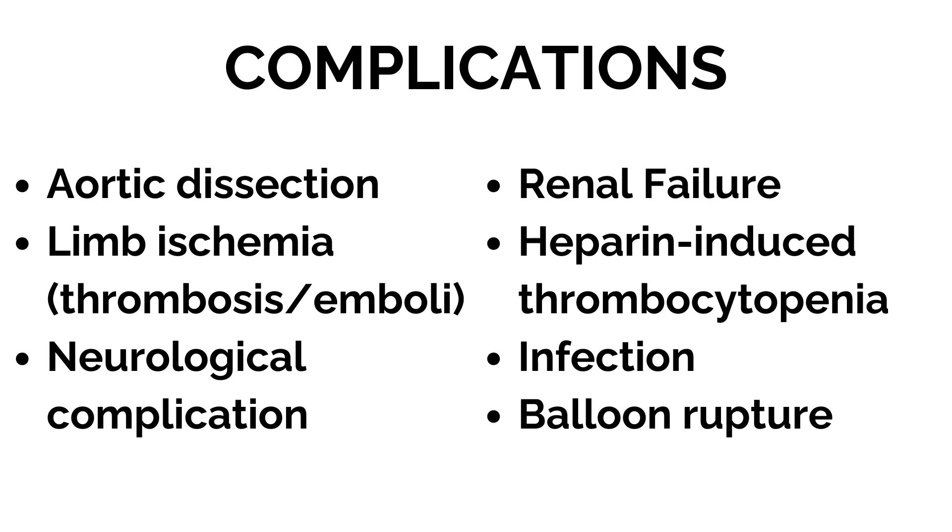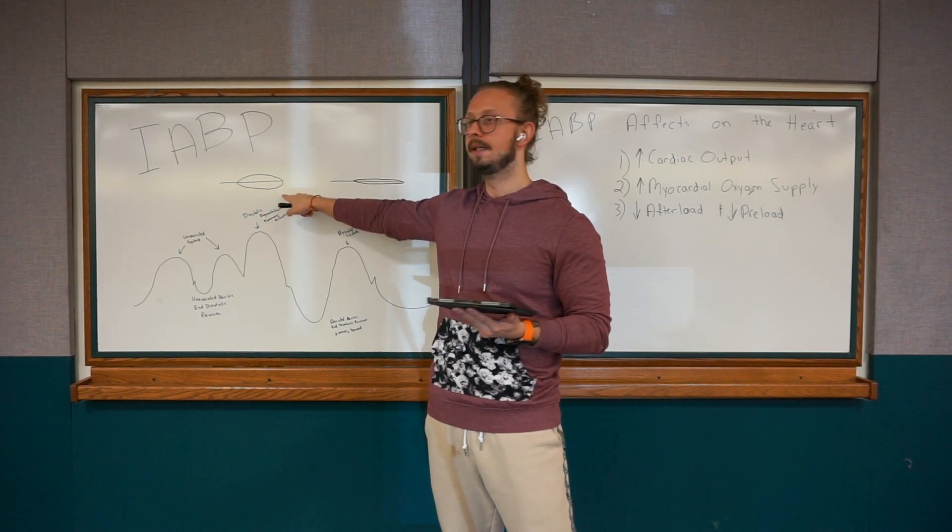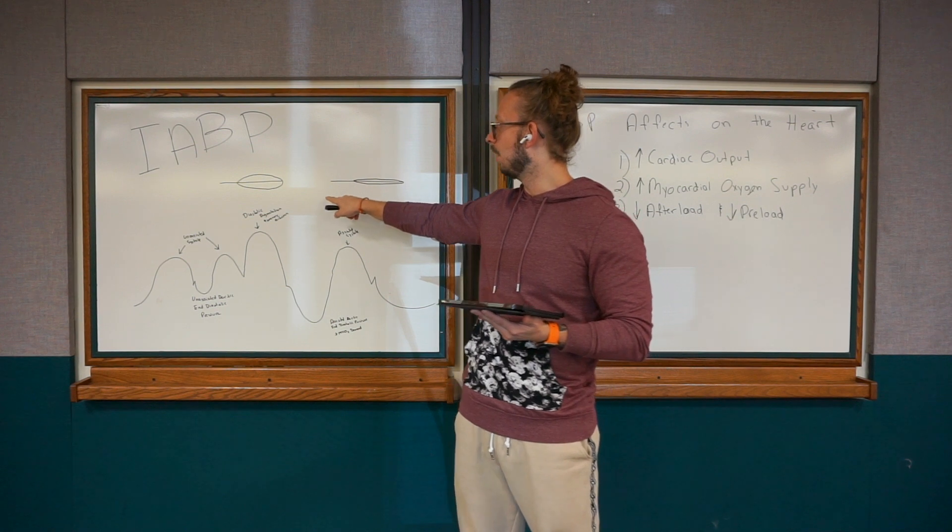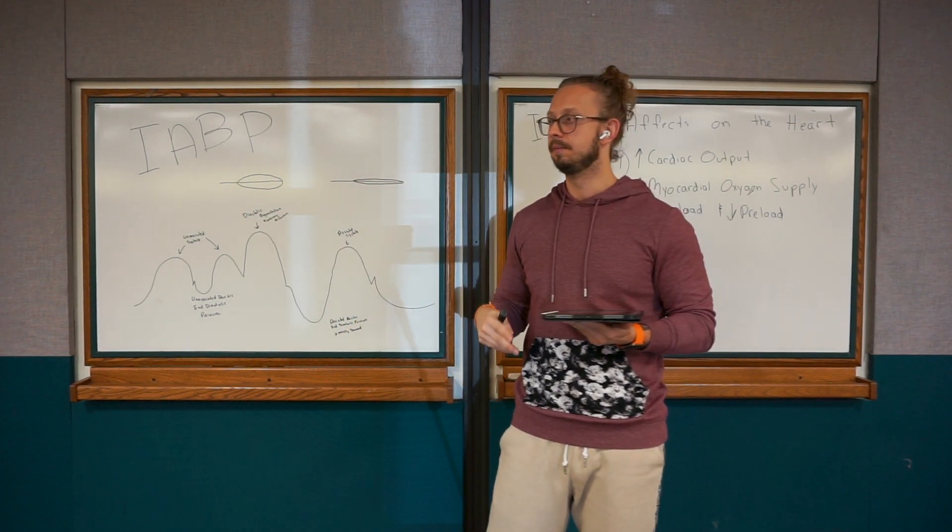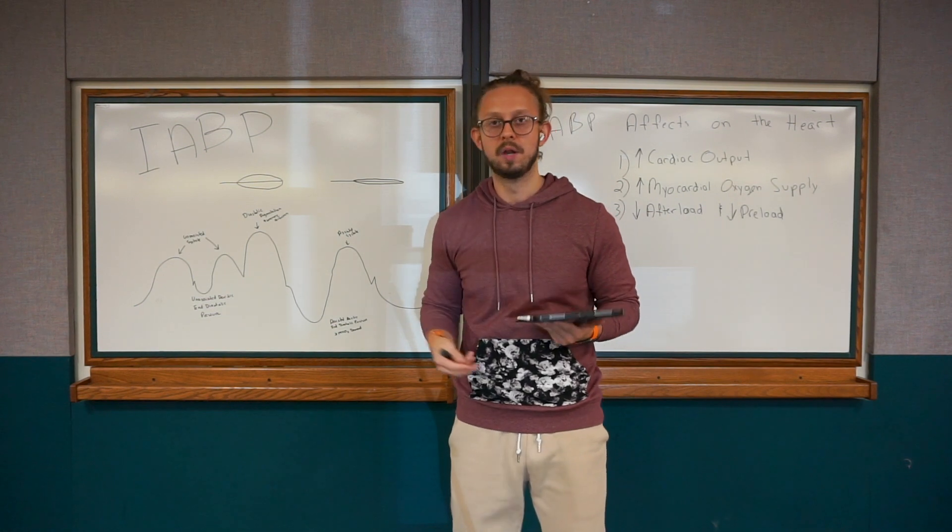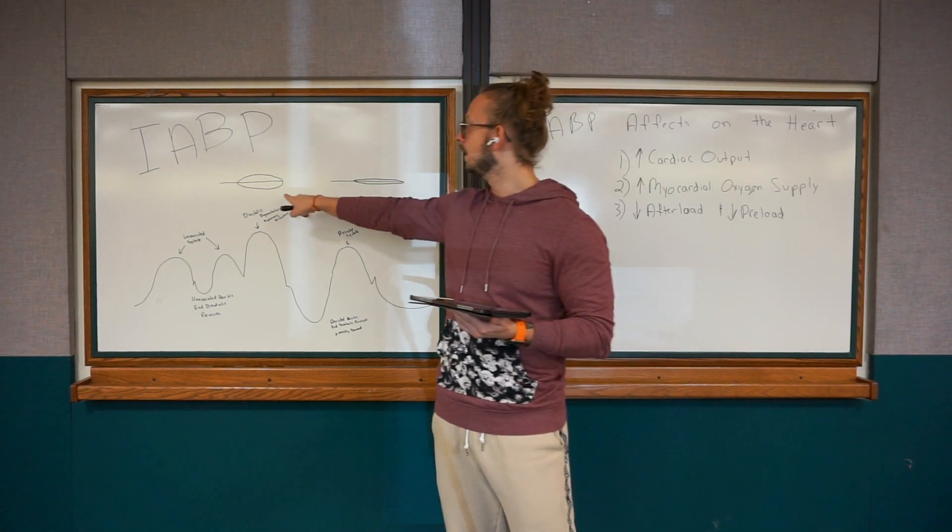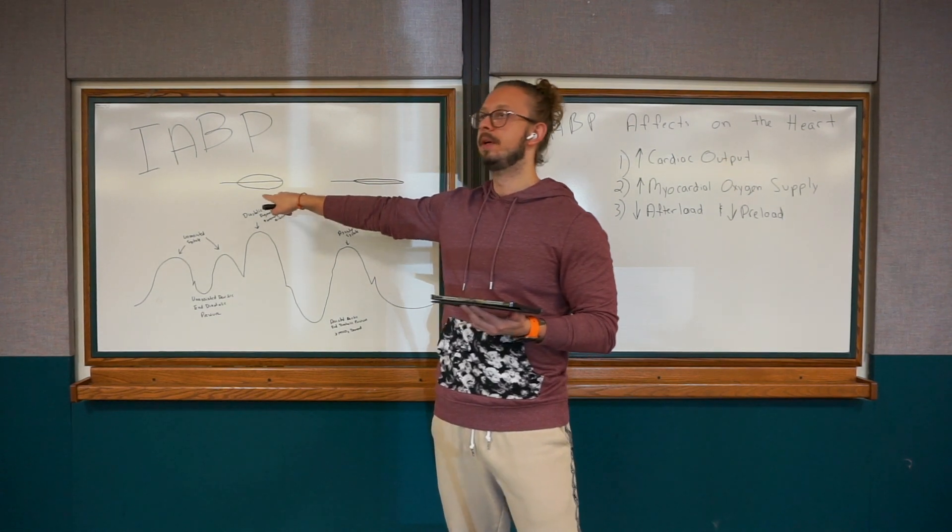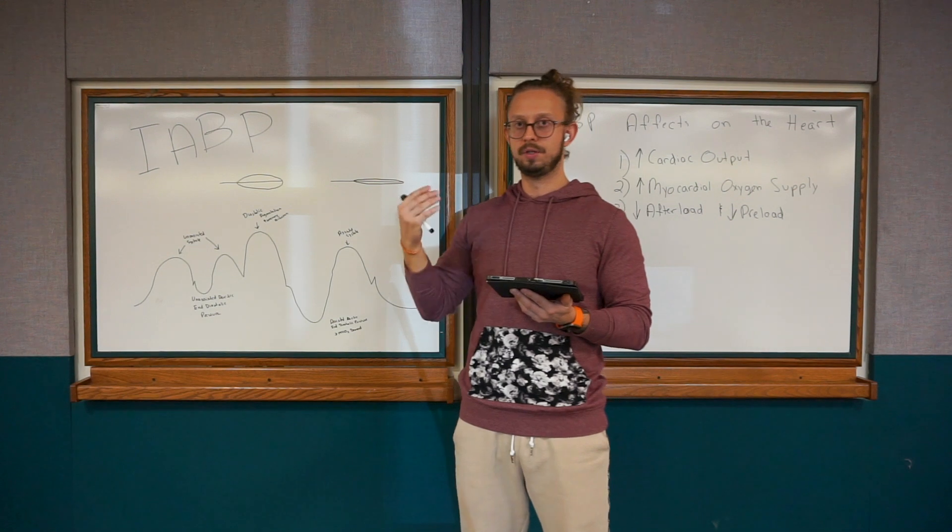If you see a decrease in urine output, that's a sign to maybe get worried that the balloon pump migrated a little bit lower and it's impeding the renal vessels. Or if your patient starts to get some neurological issues, maybe they're not remembering where they are or just some kind of change in their neural status, it could show that the balloon pump may have migrated too high and it's impeding that perfusion to the brain.